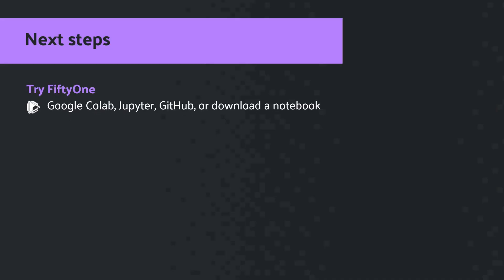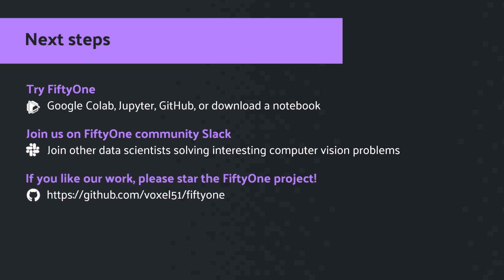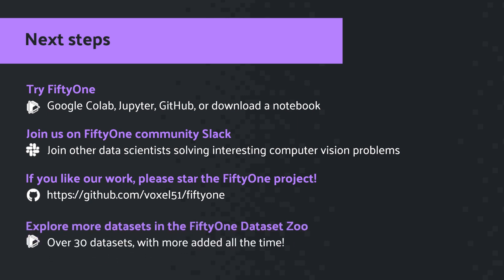So what's next? Try FiftyOne. As you saw, it's easy to get installed — it takes a few lines of code and you can do it all in under a minute. If you have any questions, make sure to join us on the FiftyOne community Slack channel to connect with other data scientists solving interesting computer vision problems. If you like our work, we'd appreciate a GitHub star on the FiftyOne repository. And don't forget there are over 30 datasets — with more added all the time — in the FiftyOne Dataset Zoo.